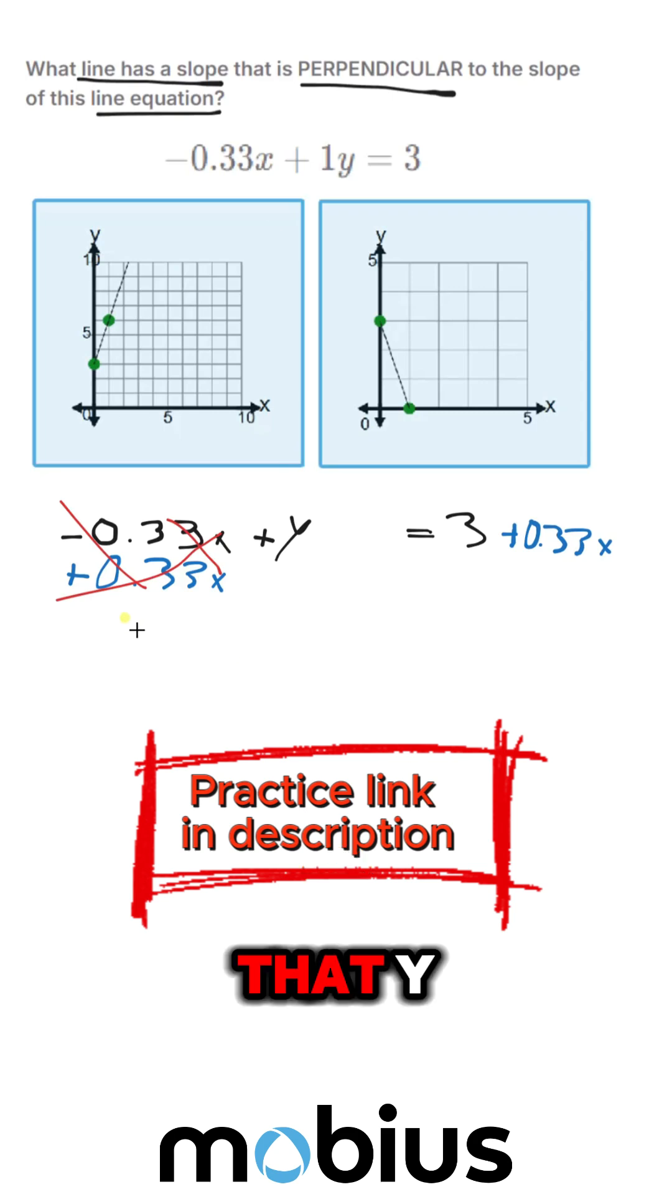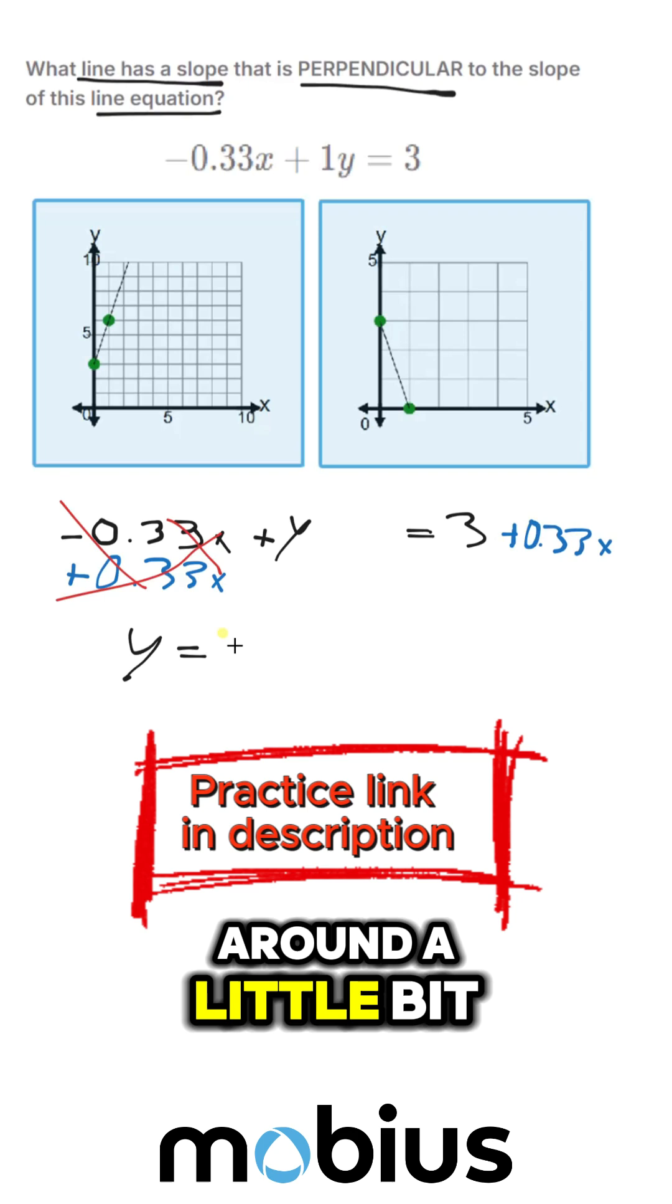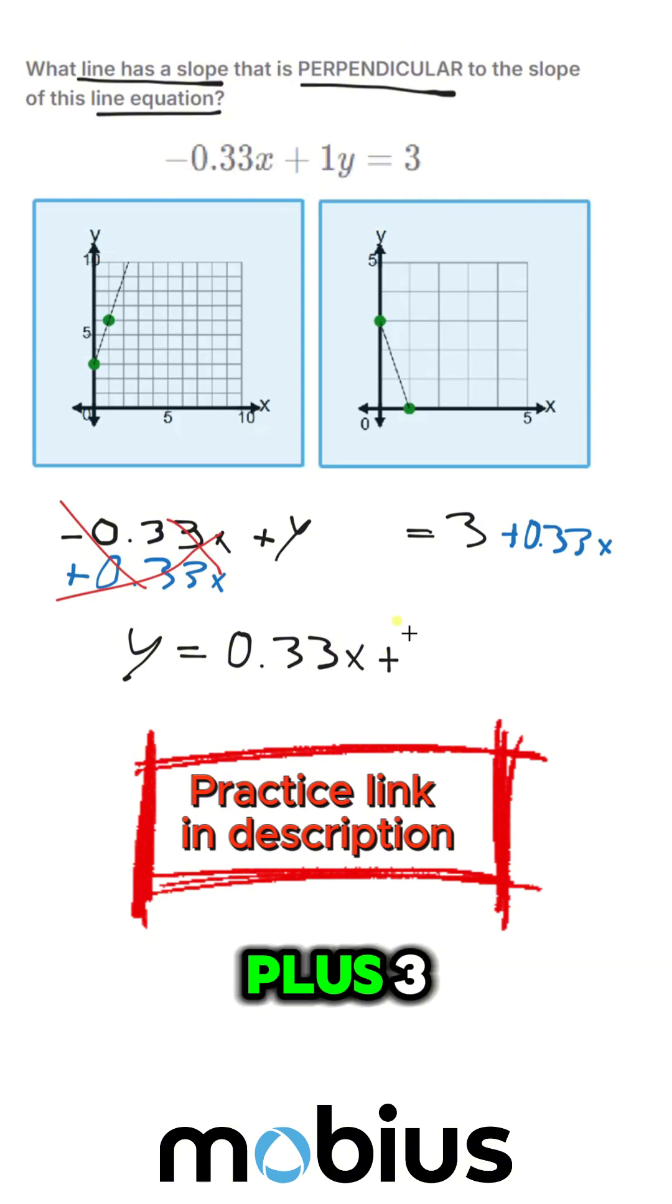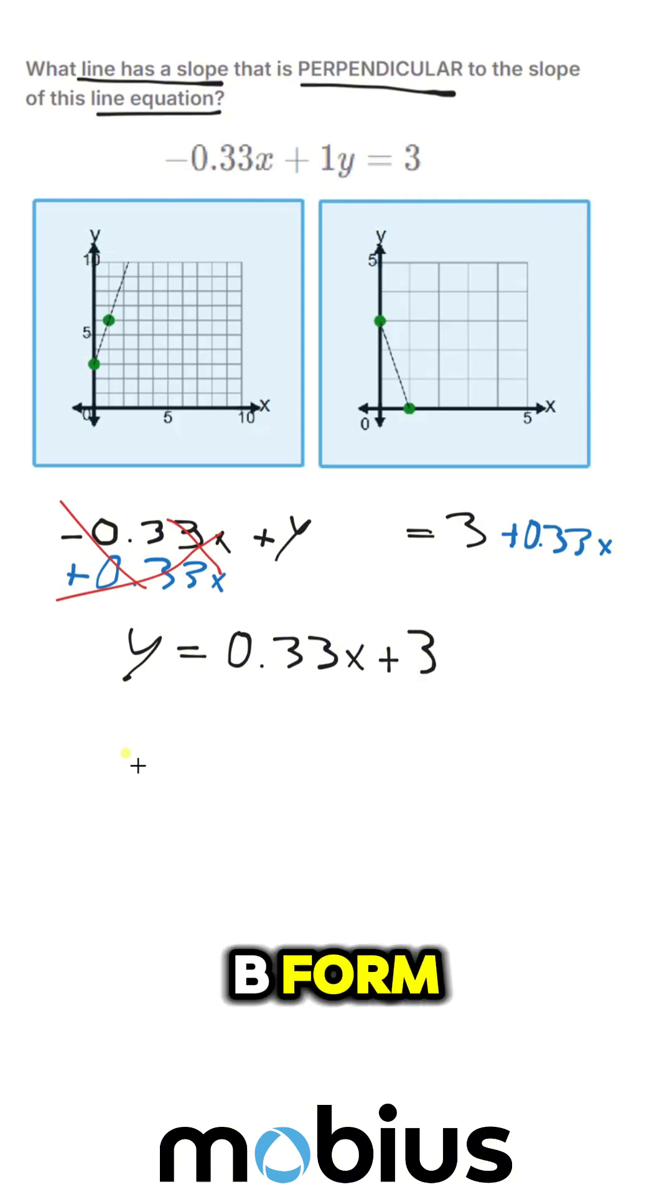So we rewrite that, y, I'm going to move this around a little bit, y equals 0.33x plus 3. So we've got y equals mx plus b form.